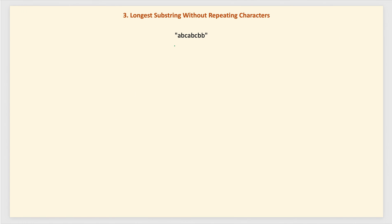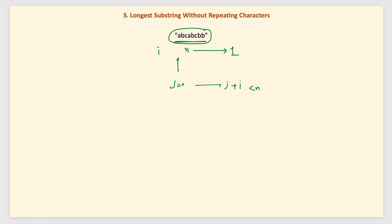How will we solve this problem? One brute force solution is: given a string of length n, check whether each substring consists of all unique characters. Start from length n and go down to length 1, trying all possible substrings starting from index j, where j plus i is less than n.